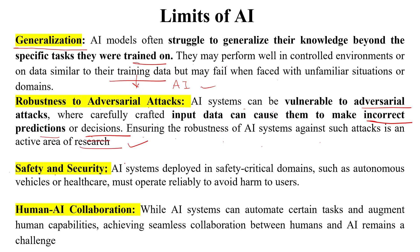The next limit is safety and security. AI systems deployed in safety-critical domains such as autonomous vehicles or healthcare must operate reliably to avoid harm to users. In critical domains like driverless cars and healthcare, AI systems must properly and reliably operate so that they can avoid harm to users.